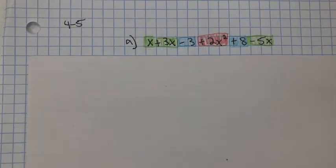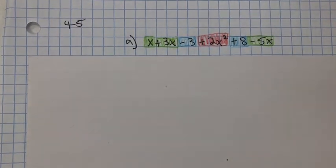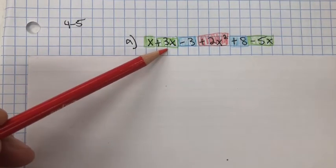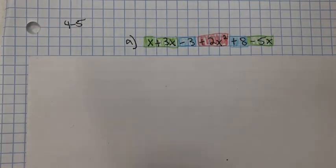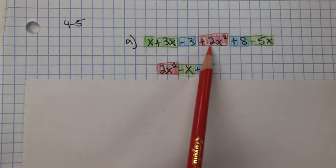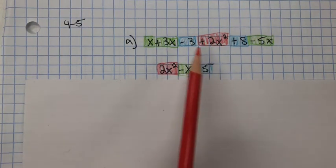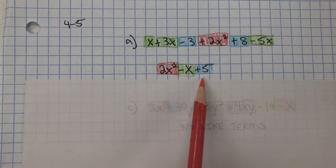In problem 4.5, you need to simplify the expressions by combining like terms. I've already colored in the like terms. X plus 3x is 4x. Minus 5x gives me a negative x. 2x squared — there are no other like terms, so there's a 2x squared. And then negative 3 and positive 8: 8 minus 3 is positive 5.